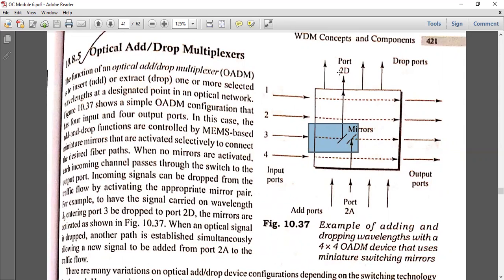The wavelength can be dropped to the 2D port. This is the 2D port where the drop occurs. For a particular wavelength lambda, when the mirror is activated, it follows a different path.